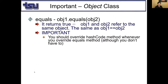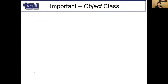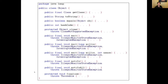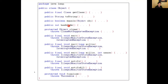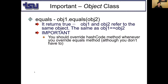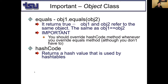One of the important methods we have is equals. The default implementation will return true if two objects point to the same memory space; otherwise it returns false. You should override the hashCode method whenever you override equals, although you don't have to. hashCode doesn't take any input argument — it returns an integer, and it's important for hash tables.